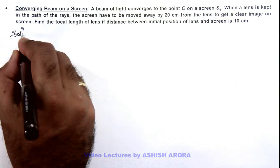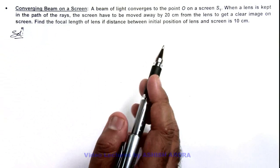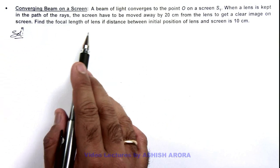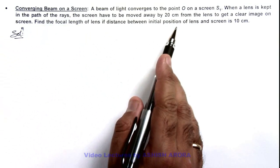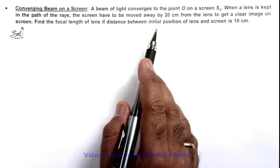In this situation, as we are given that the screen has to be moved away by 20 centimeters, this means the lens we are using is a diverging lens.